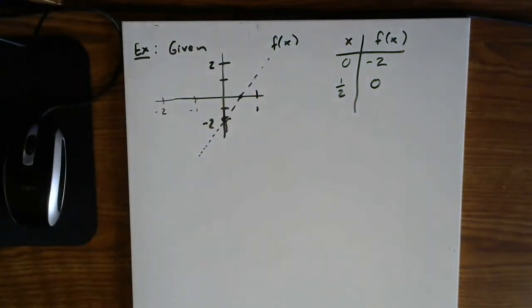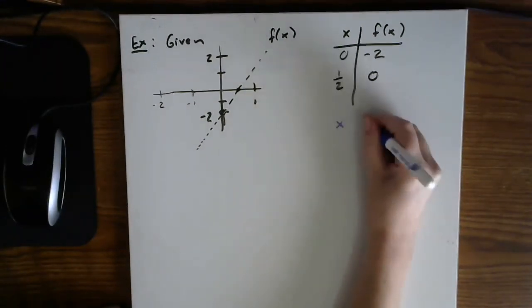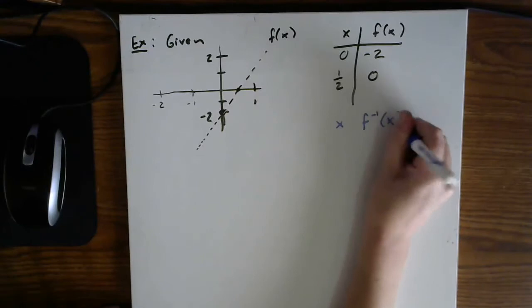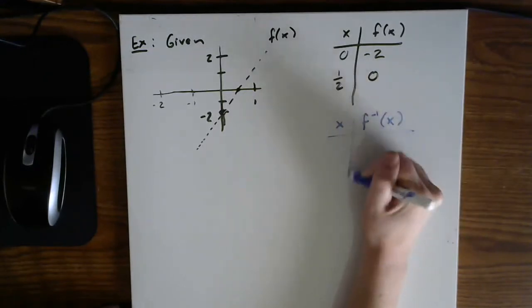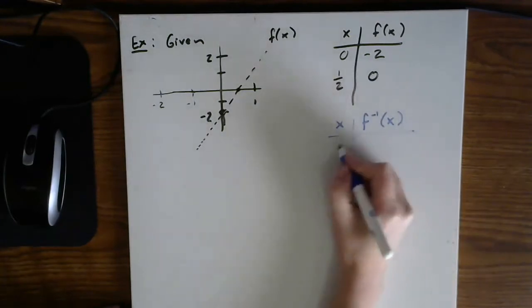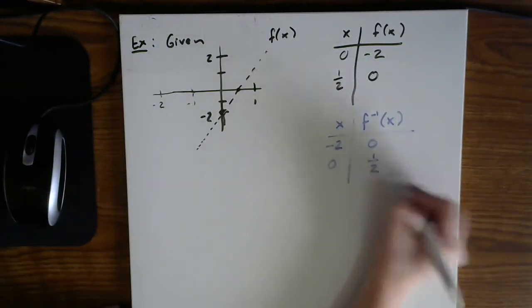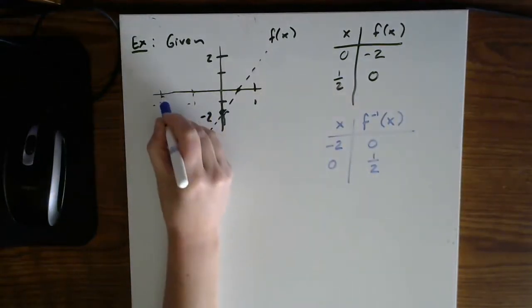So now if we do the inverse, we're going to swap. So let's go ahead and write down the table of values for the inverse. And I think this is probably the easiest way to start. Just literally rewrite the ordered pairs in opposite order.